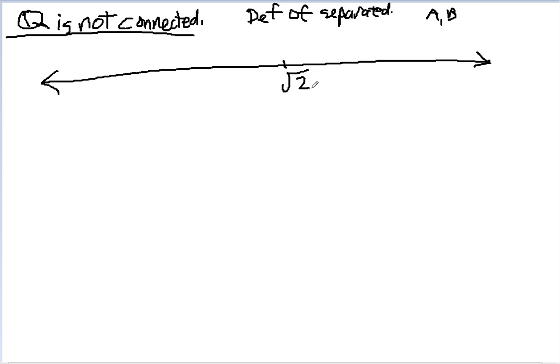Our favorite irrational number is square root of 2. So my A is I'm going to pick all the rationals over here: Q intersect negative infinity to square root of 2.